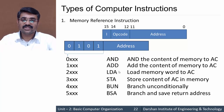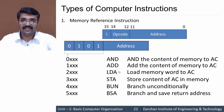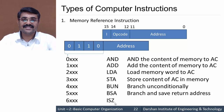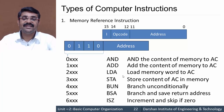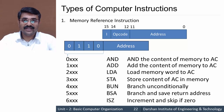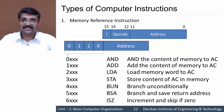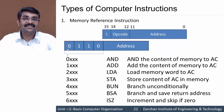We'll discuss all these instructions in detail along with their micro-operations later. The last direct-addressing memory reference instruction has opcode 110, giving hex code 6xxx, designated as ISZ — increment and skip if zero. It increments the content of the accumulator and skips the next instruction if the result is zero. These complete all memory reference instructions with the I bit set to 0 (direct addressing).